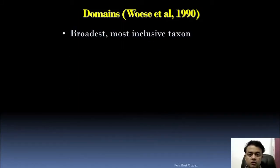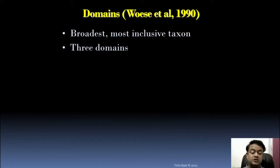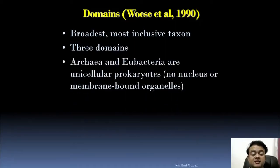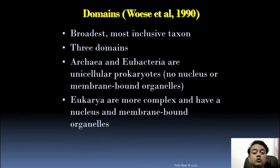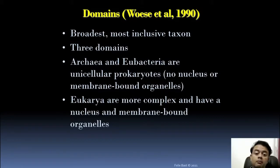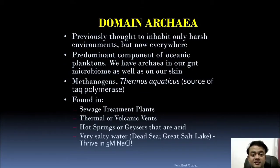The domain is the broadest and most inclusive taxon — the root of the tree of life is basically the domains. There are three domains. Archaea and Bacteria are unicellular prokaryotes with no nucleus or membrane-bound organelles, while Eukaryotes are more complex and have a nucleus and membrane-bound organelles.